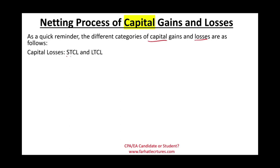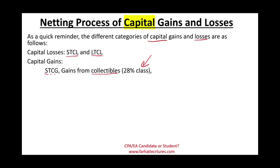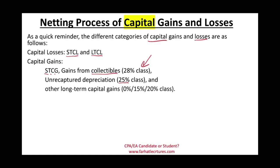Under capital losses we could have short-term capital losses and long-term capital losses. For a short-term capital loss, you held the capital asset for less than a year. For capital gains, we have three categories: short-term capital gains from collectibles subject to 28% tax rate, unrecaptured depreciation at 25% tax rate, and other long-term capital gains subject to 0%, 15%, and 20%. Capital gains really have three categories: collectibles, unrecaptured depreciation, and other long-term capital gains.